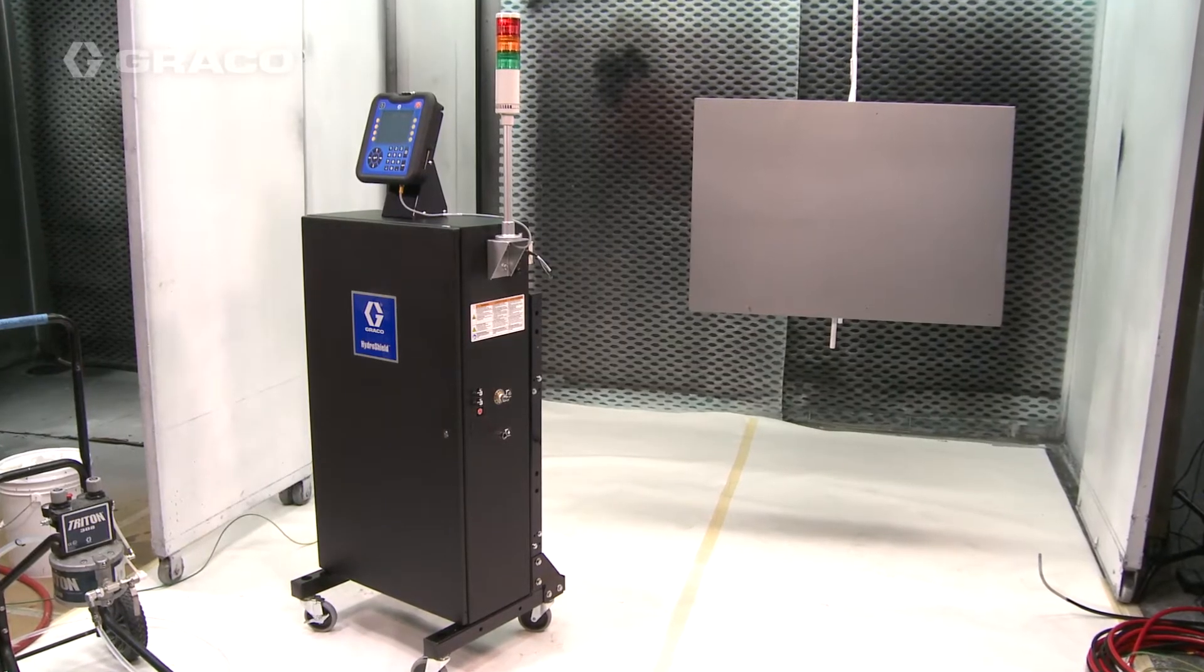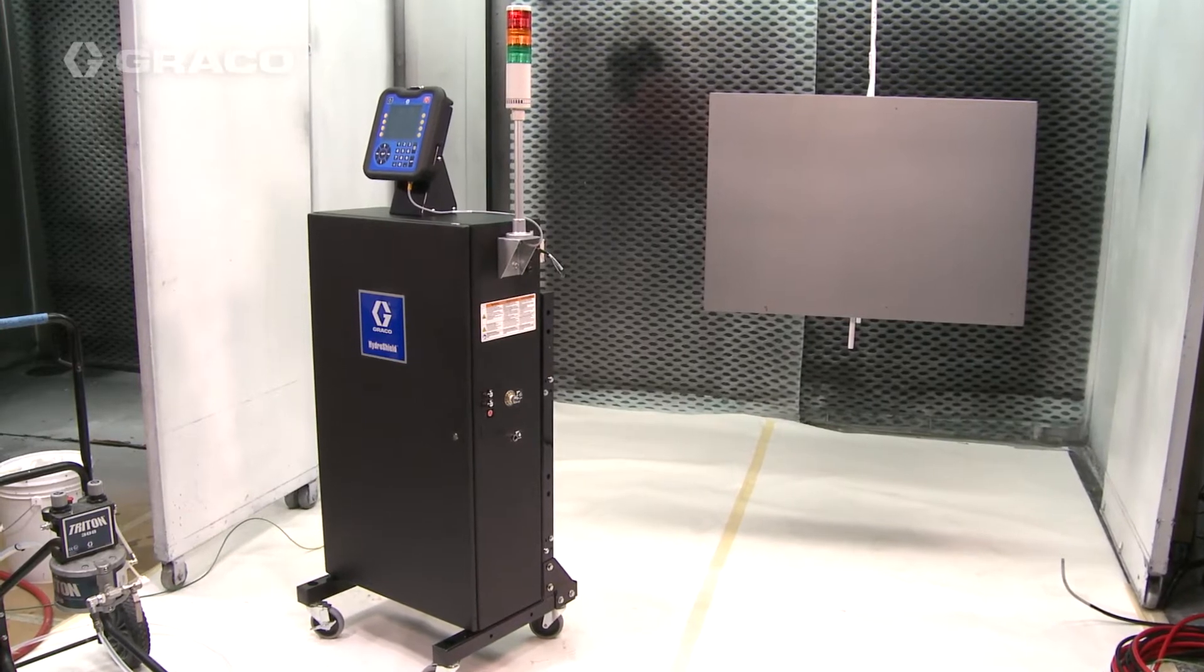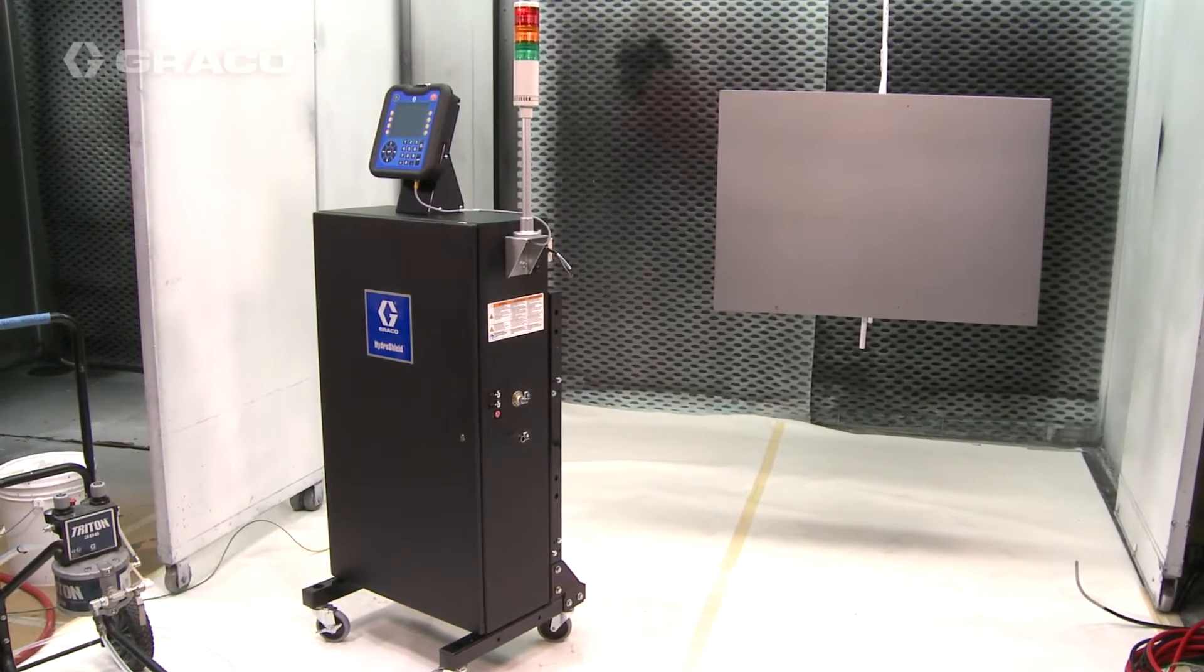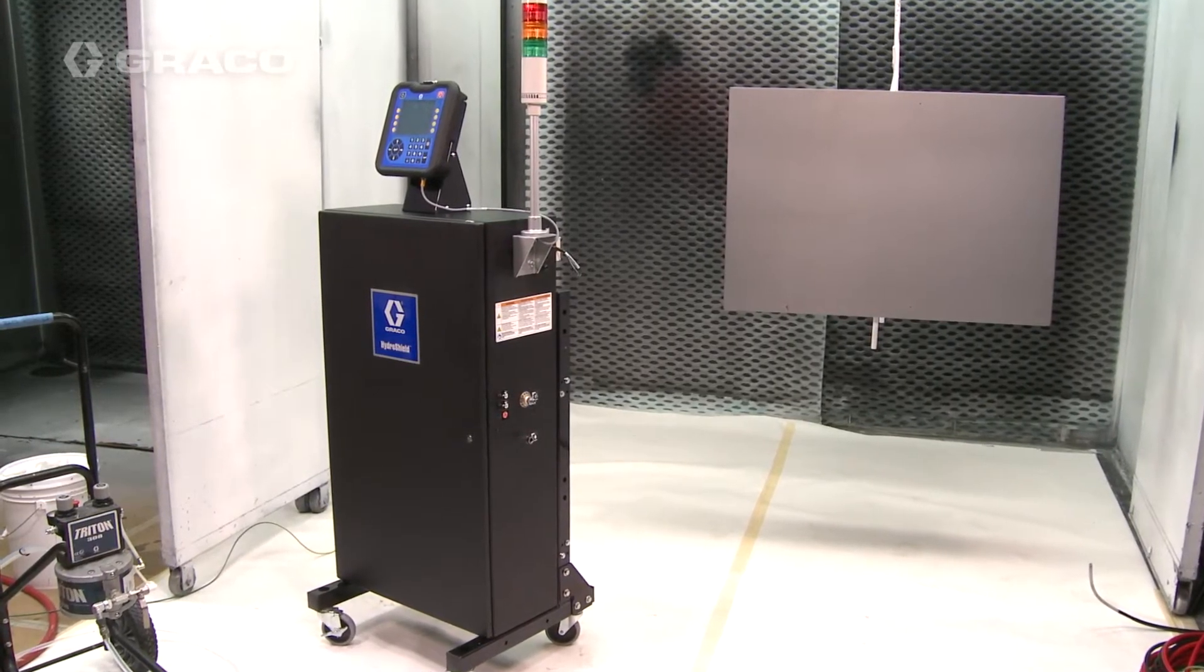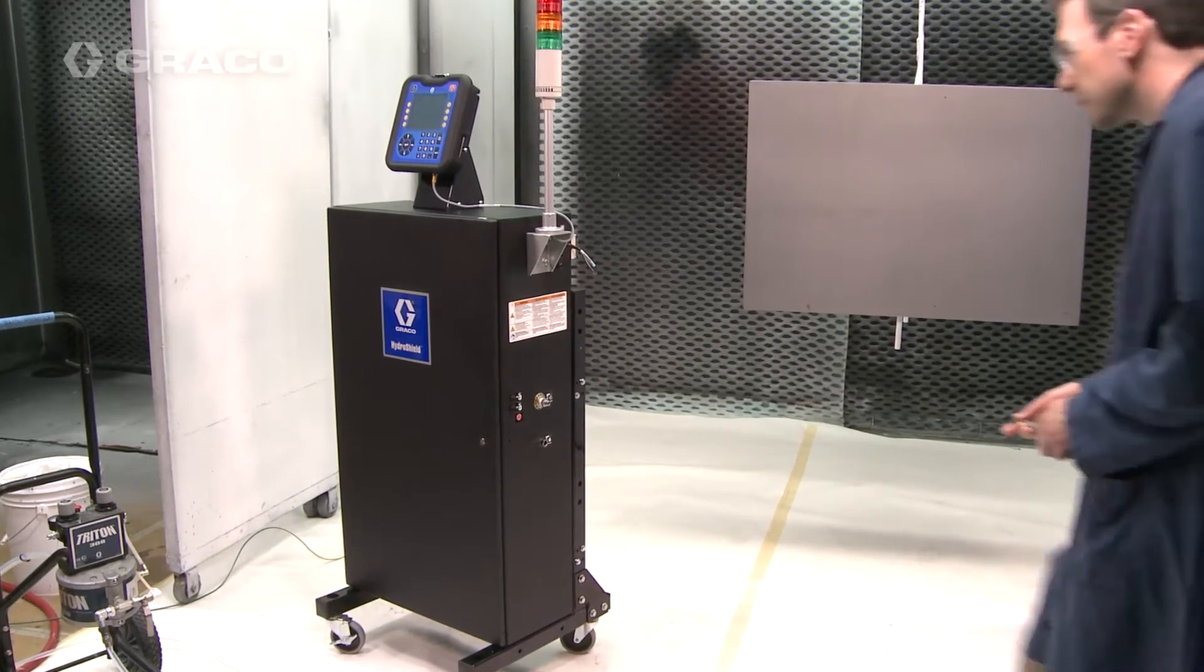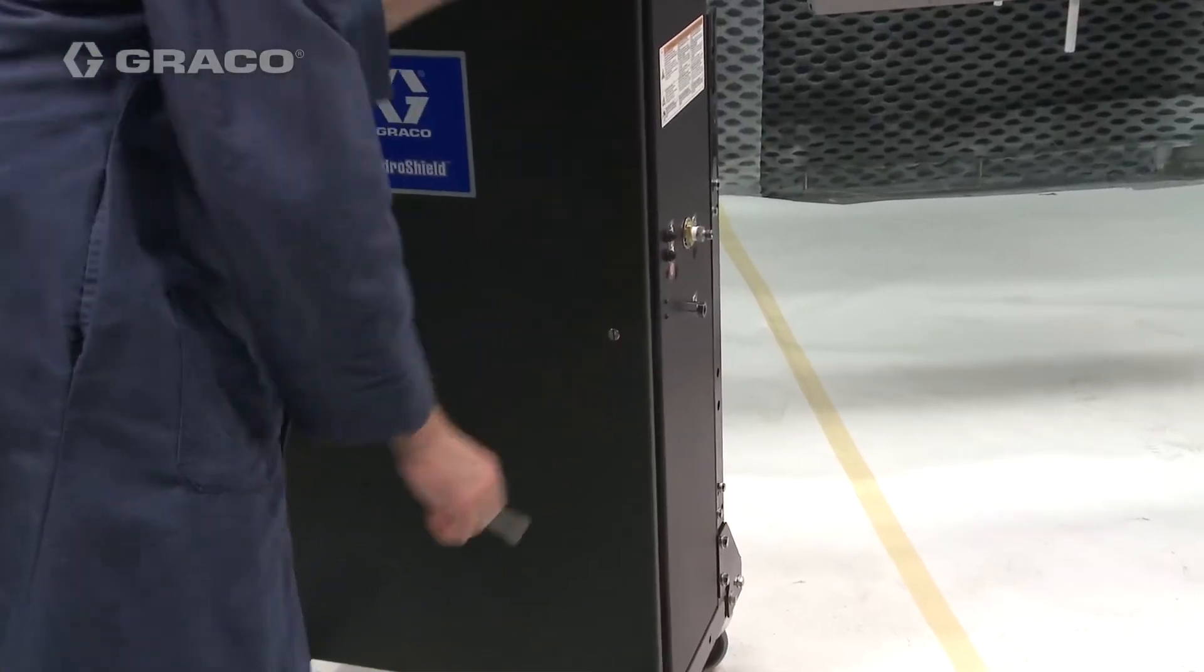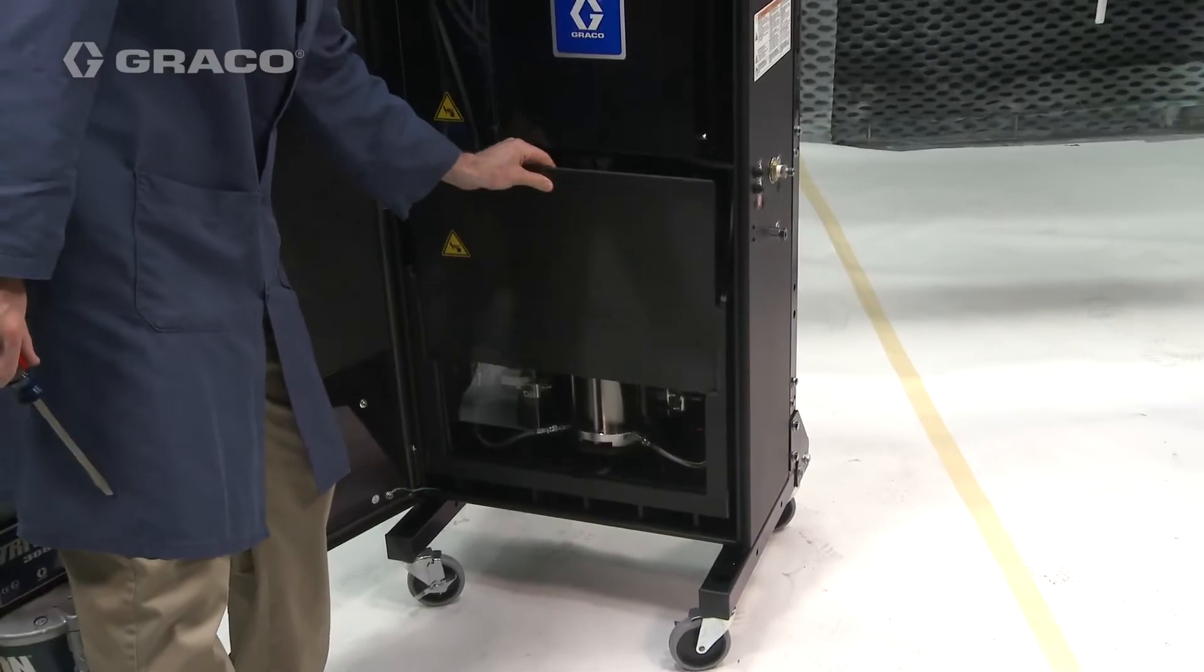Next, we will connect the fluid hose to the fluid pressure regulator inside the cabinet. If the system has been in service, before opening the cabinet, follow the pressure relief procedure and the voltage discharge and ground procedure outlined in the manual. Open the cabinet and slide the electrostatic shield up to remove it.